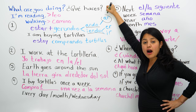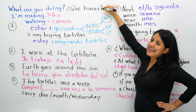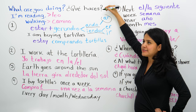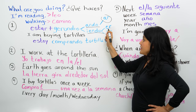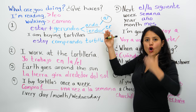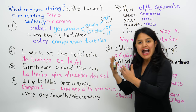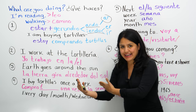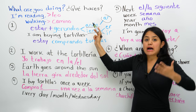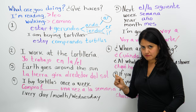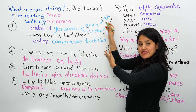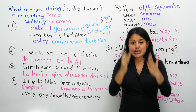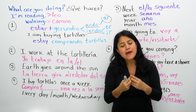For verbs that end with -AR, like caminar, cocinar, cantar, almorzar — drop the -AR and add -ando. For verbs ending with -ER or -IR, like correr, vivir, salir, comer — they end with -iendo/-yendo. It's like making 'I go' → 'I am going.' So you're not saying camino, you're saying caminando. With this gerund, you say what's happening right now, and native speakers use it more because for something you are doing at the moment of speaking, it makes sense to be more specific.